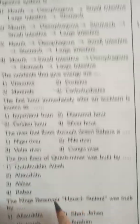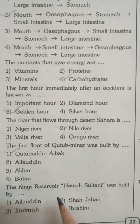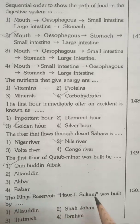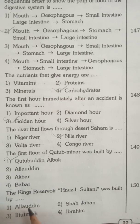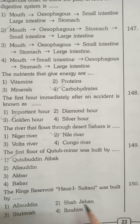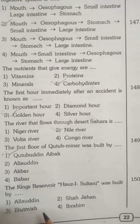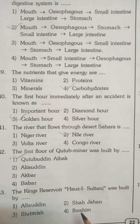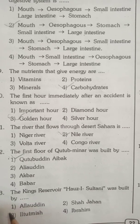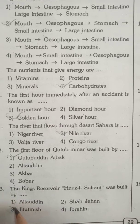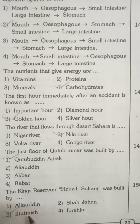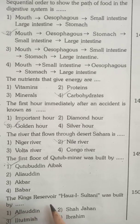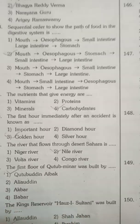The king's reservoir — Hauz-i-Sultani — was built by Iltutmish. The options were Alauddin, Shahjahan, Ibrahim, and Iltutmish, and the answer is Iltutmish built the Hauz-i-Sultani reservoir.